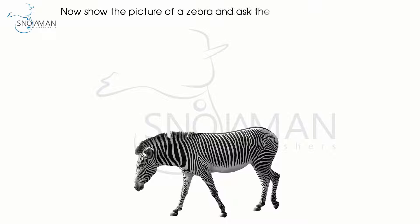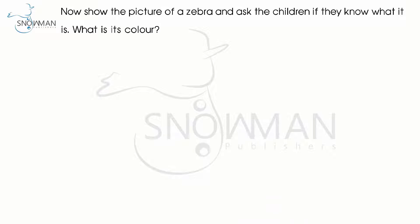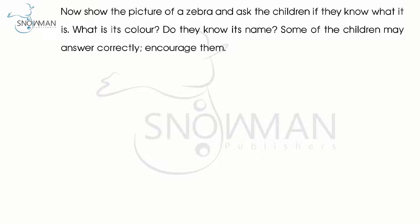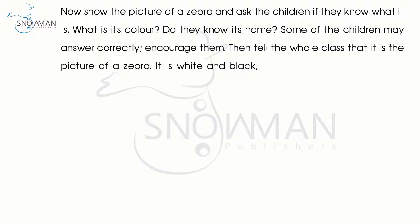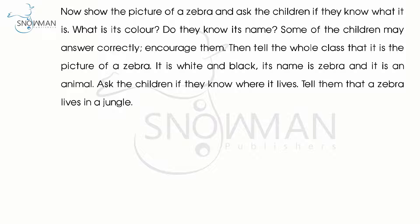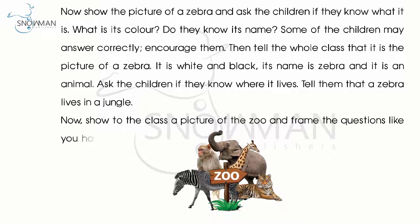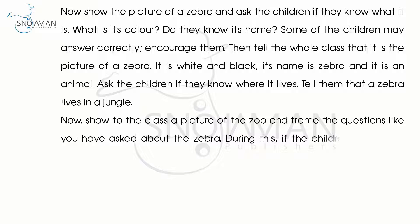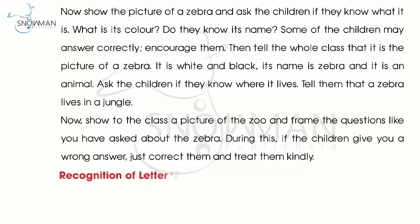Now show the picture of a zebra and ask the children if they know what it is, what its color is, and if they know its name. Some children may answer correctly — encourage them. Then tell the whole class that it is a zebra, it is white and black, and it is an animal. Ask the children where it lives and tell them a zebra lives in a jungle. Now show a picture of a zoo and frame questions as before. If children give a wrong answer, correct them kindly.